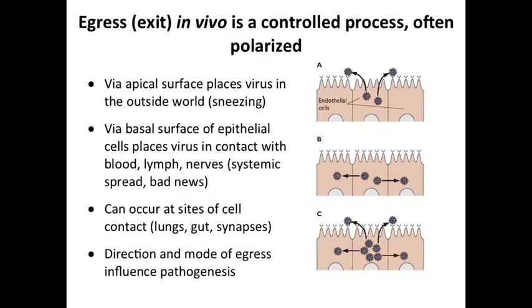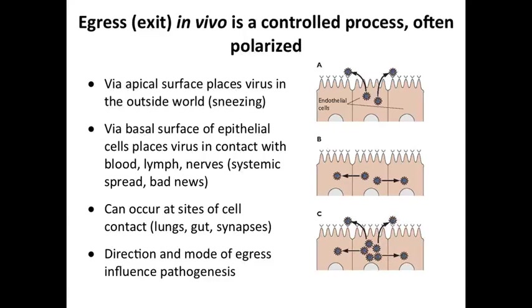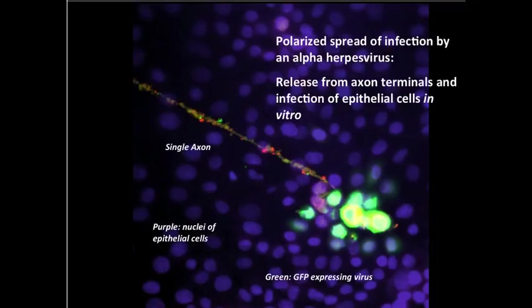Curiously, virions are being released in a very specific part of the cell — only one domain of the plasma membrane is releasing virions, even though the whole cell is infected. The budding process is directed toward one portion. The leaving of particles from cells is very controlled. When cells in us are polarized, they typically have apical and basolateral domains, and viruses can leave at the top or through the sides.